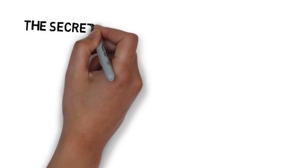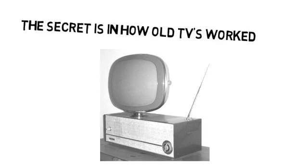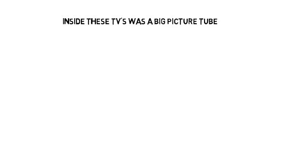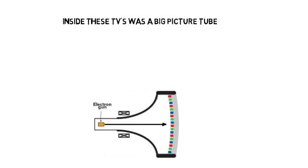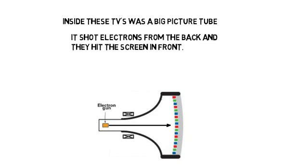The secret is in how old TVs worked. You remember the old TVs? Inside these TVs was a big picture tube. It shot electrons from the back and they hit the screen in front. Normally they would go straight ahead.